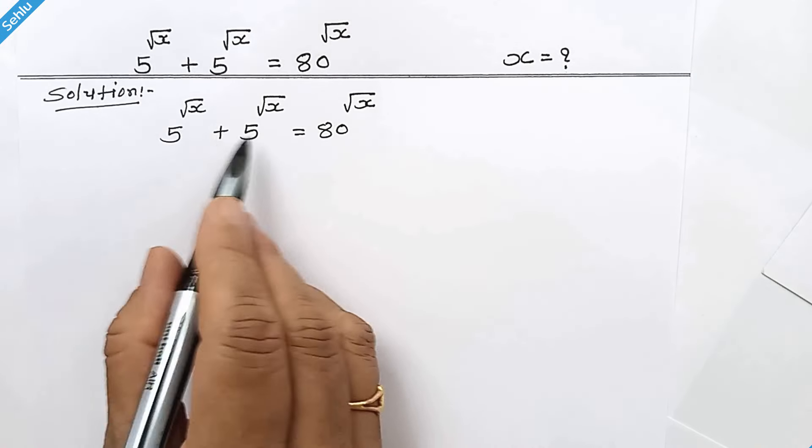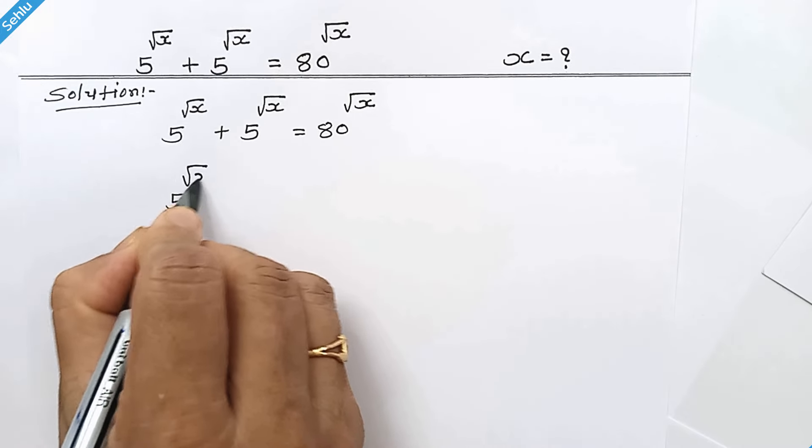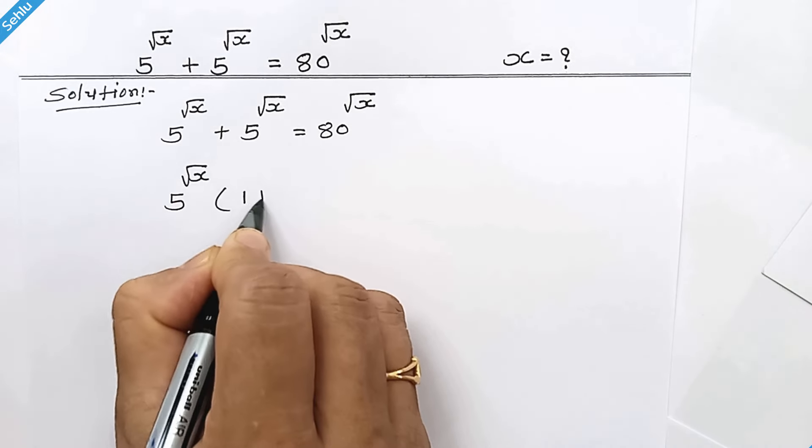In the first step we can factor out 5 to the power square root of x. So what remains is 1 plus 1.